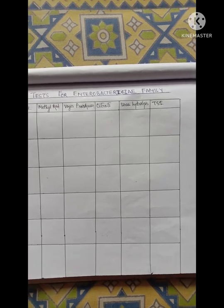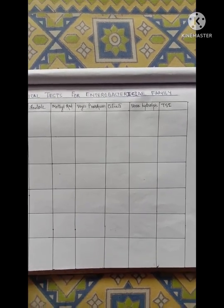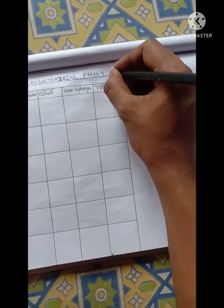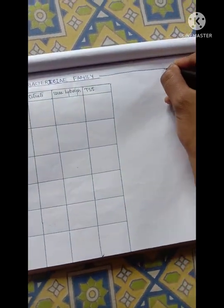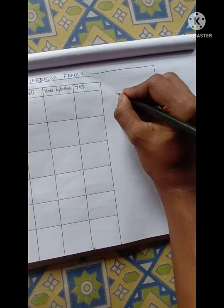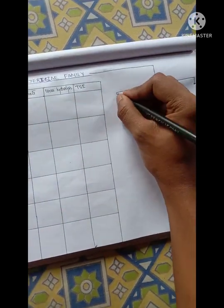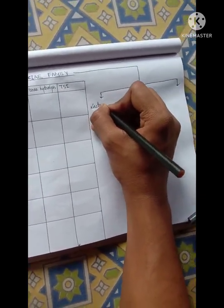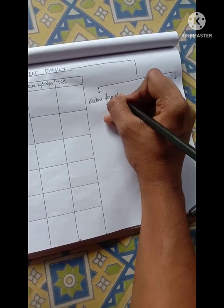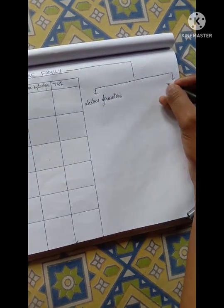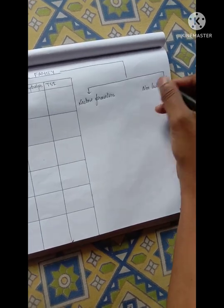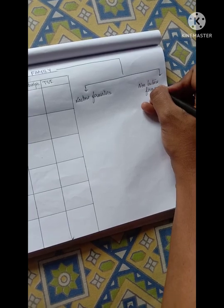First of all, I will be telling you which bacteria fall under the Enterobacteriaceae family, what are the tests that we do, and then we will finally tell you the trick to remember that. The Enterobacteriaceae family can be broadly classified into two groups: the first will be lactose fermenters — bacteria which can ferment lactose — and the non-lactose fermenters, which cannot ferment lactose.